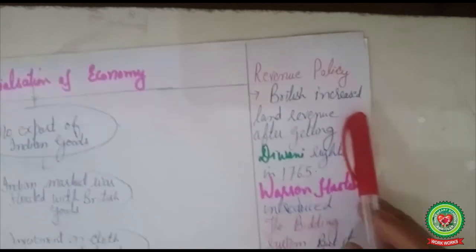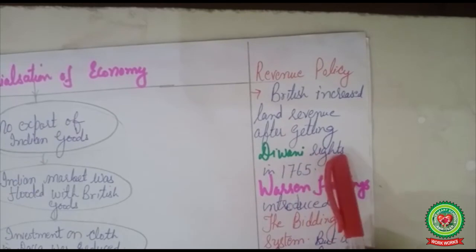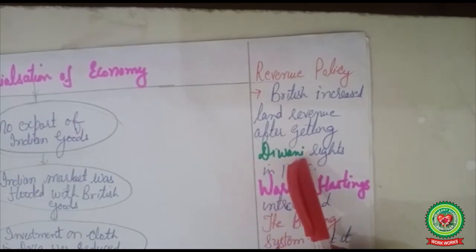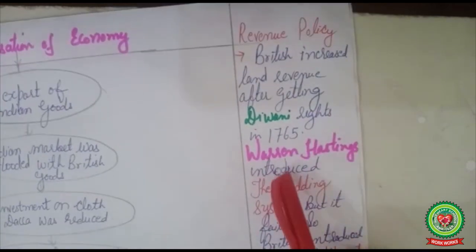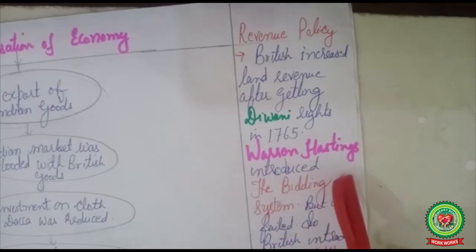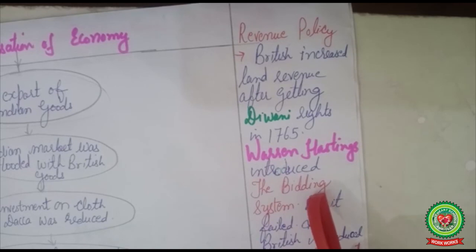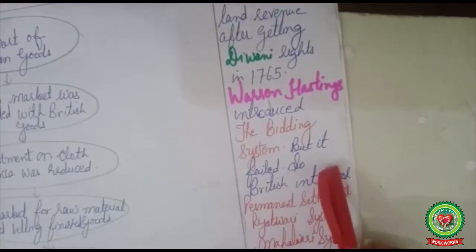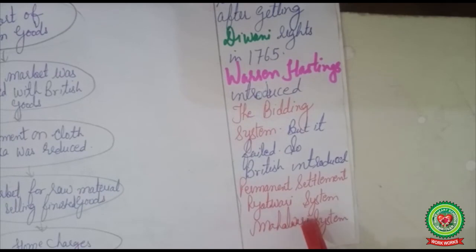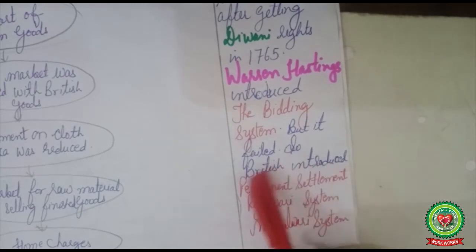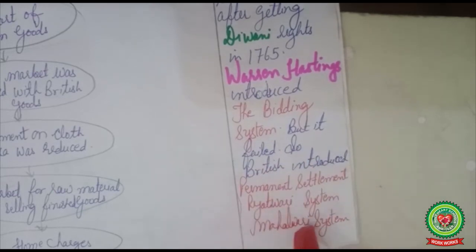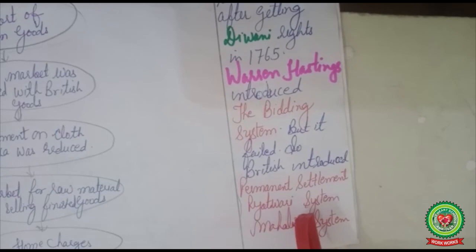The British increased land revenue after getting the Diwani rights in 1765 — Diwani means the right to collect taxes. Warren Hastings was the first Governor General who introduced the bidding system, where whoever gave the highest bid was given the right to collect land revenue, and the Zamindars were deprived of their right of holding land. But it failed. So the British introduced three major land revenue systems in India: the Permanent Settlement, the Ryotwari system, and the Mahalwari system, which will be discussed in the next session.